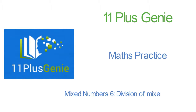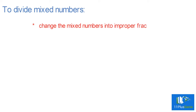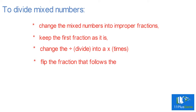Division of Mixed Numbers. To divide mixed numbers, change the mixed numbers into improper fractions. Keep the first fraction as it is, change the divide into a times, and flip the fraction that follows the times sign.